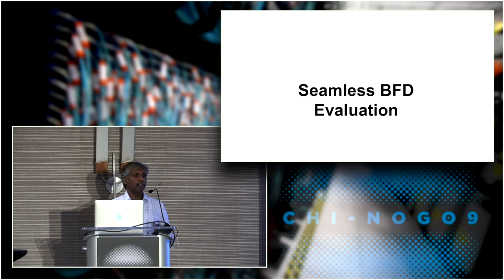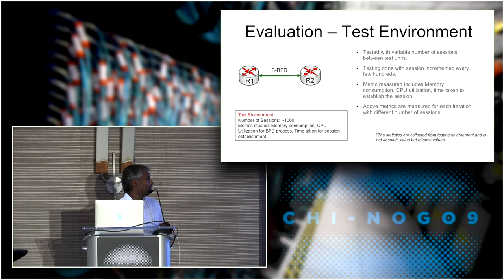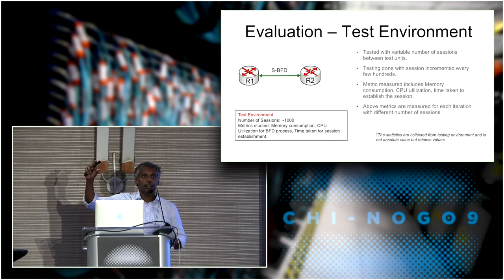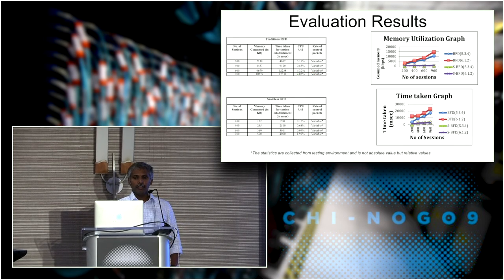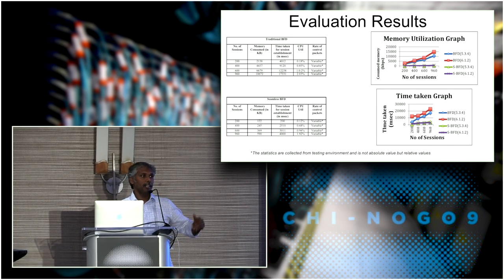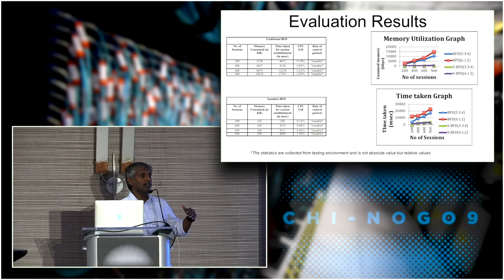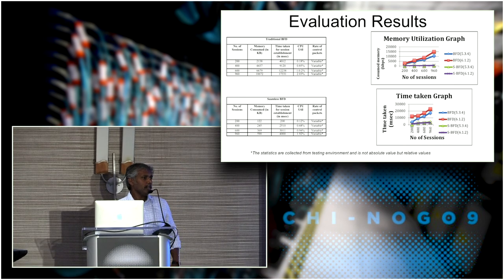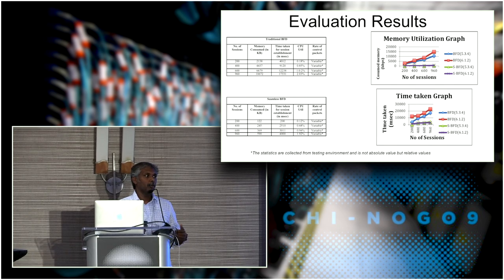For evaluation, we ran a quick test in a lab environment with two nodes running up to 1,000 BFD sessions. The metrics studied were memory consumption on the target node and time taken to bring all sessions up. On memory utilization, with traditional BFD, memory increases exponentially as more sessions are established because the target node must maintain state entries for each session. With seamless BFD, memory utilization is almost flat — irrespective of the number of sessions, there is just one reflector session entry. Time to bring sessions up is also much better with seamless BFD because it eliminates the negotiation handshake.